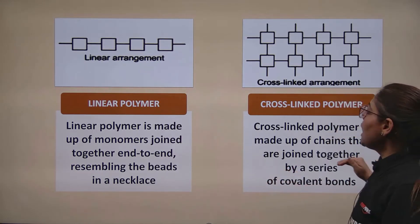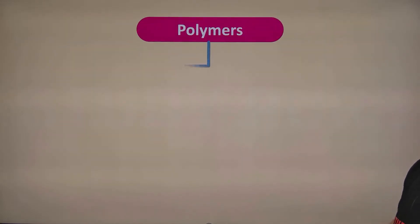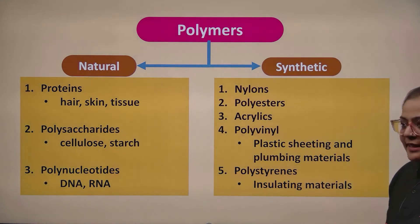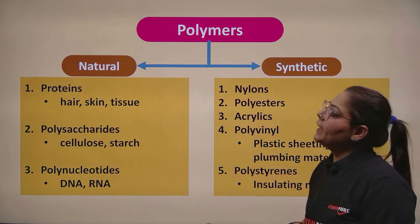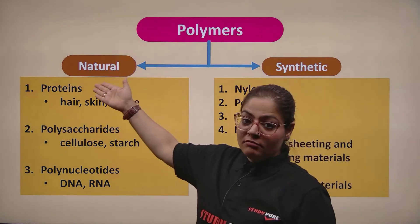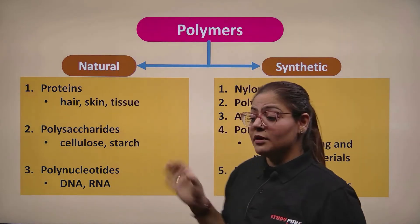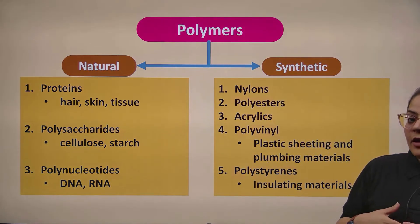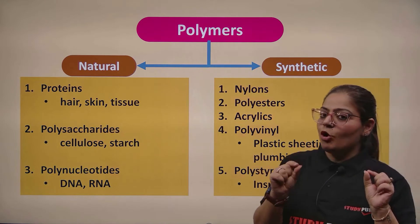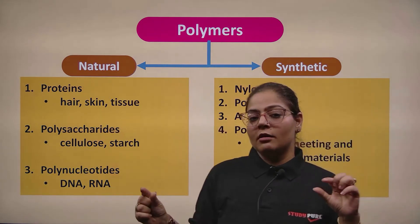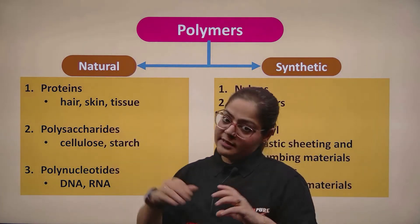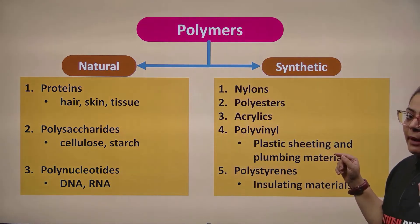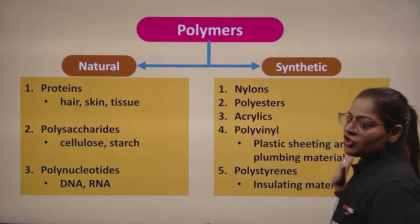Now let's talk about the types of polymers. Just as fibers have types, polymers also have types. To your surprise, they can be natural — because the same logic of monomer forming polymer also happens in natural processes. The second type is synthetic, which is what we have been discussing.